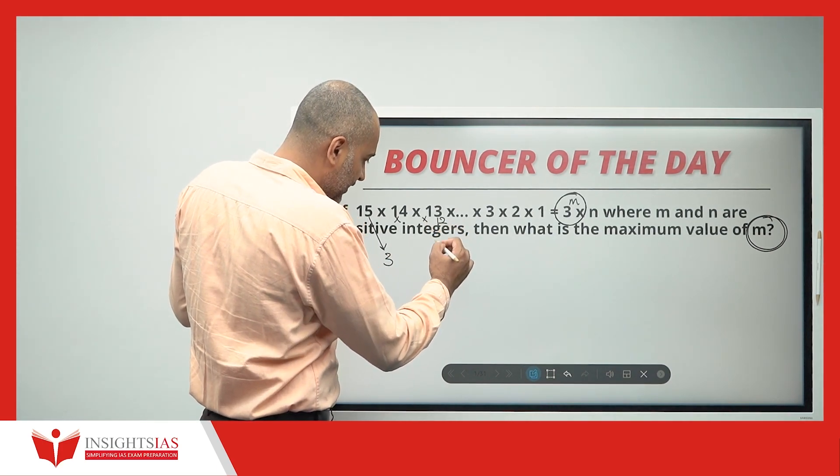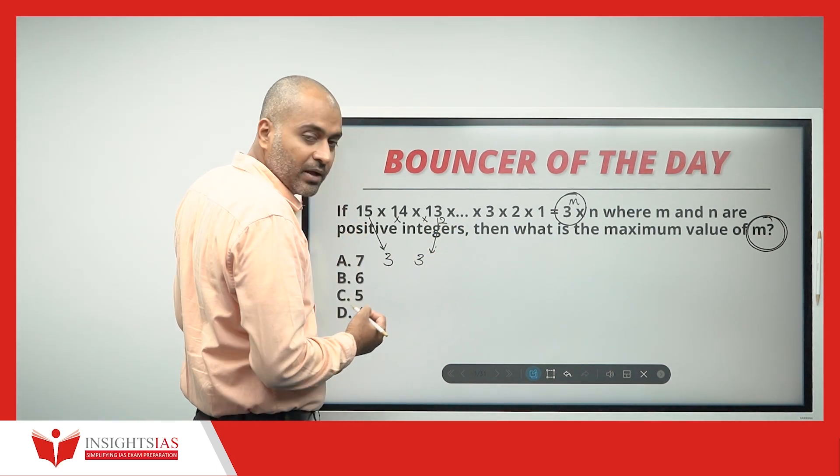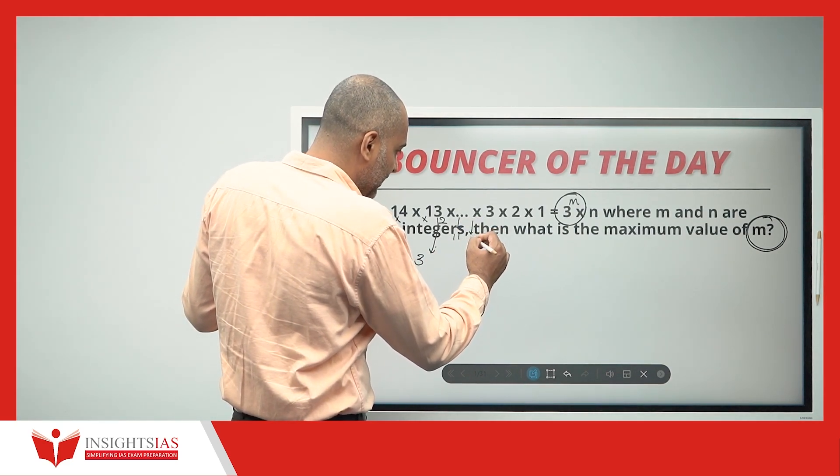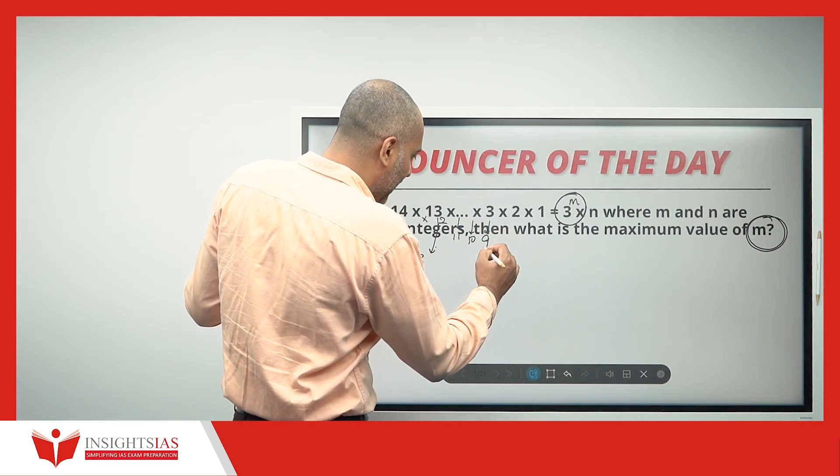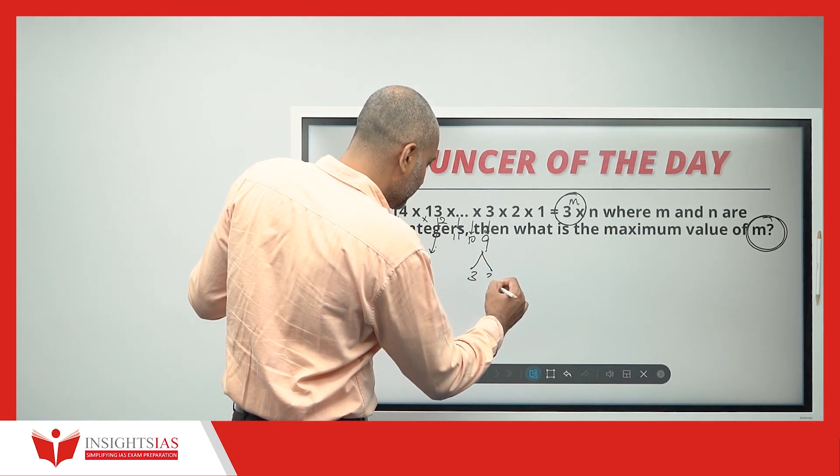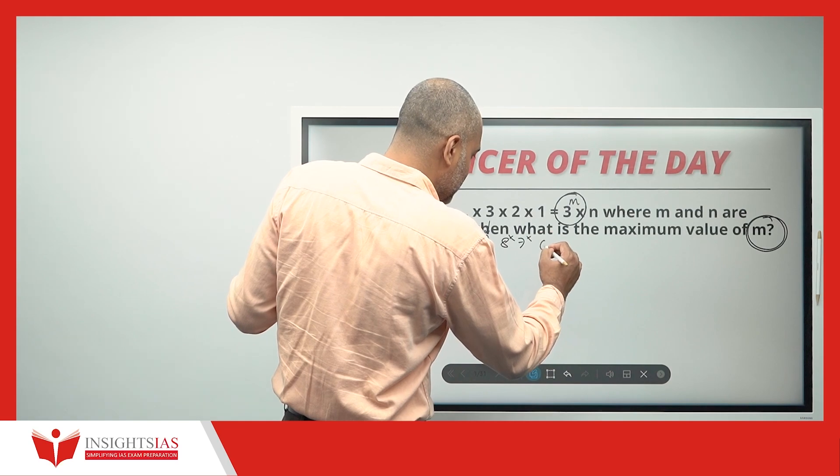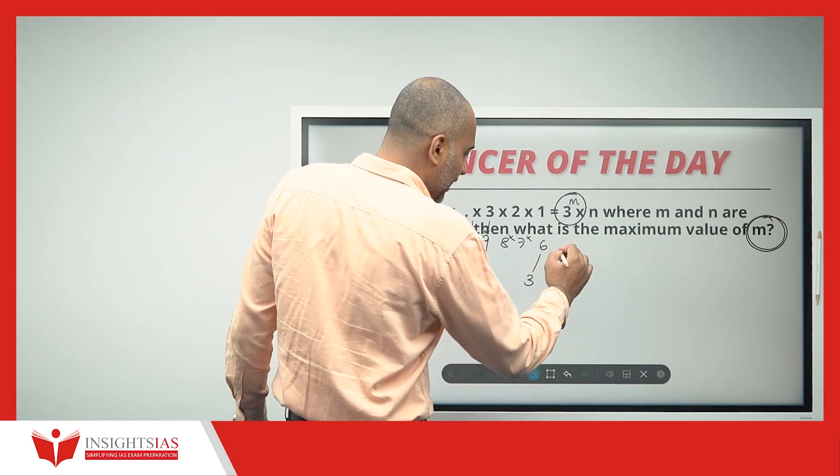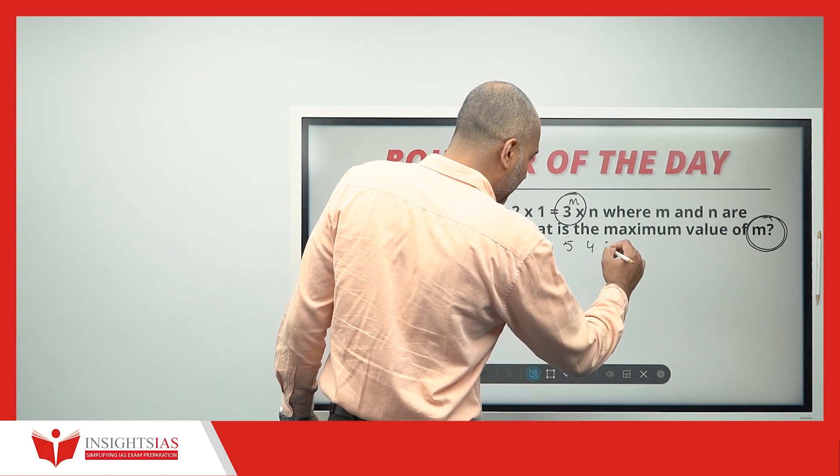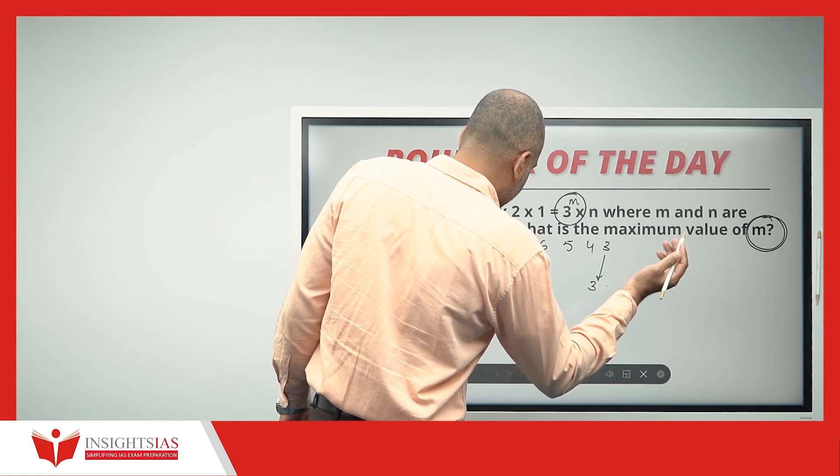12 also, we have a 3 here. Similarly, in the 11, we don't have. In the 10 also, we don't have 3. In 9, we have 2 threes. Similarly, 8, we don't have. 7, we don't have. In the 6, we have a 3. In the 5, we don't have. In the 4, we don't have. In the 3, we have a 3 here, that's it.